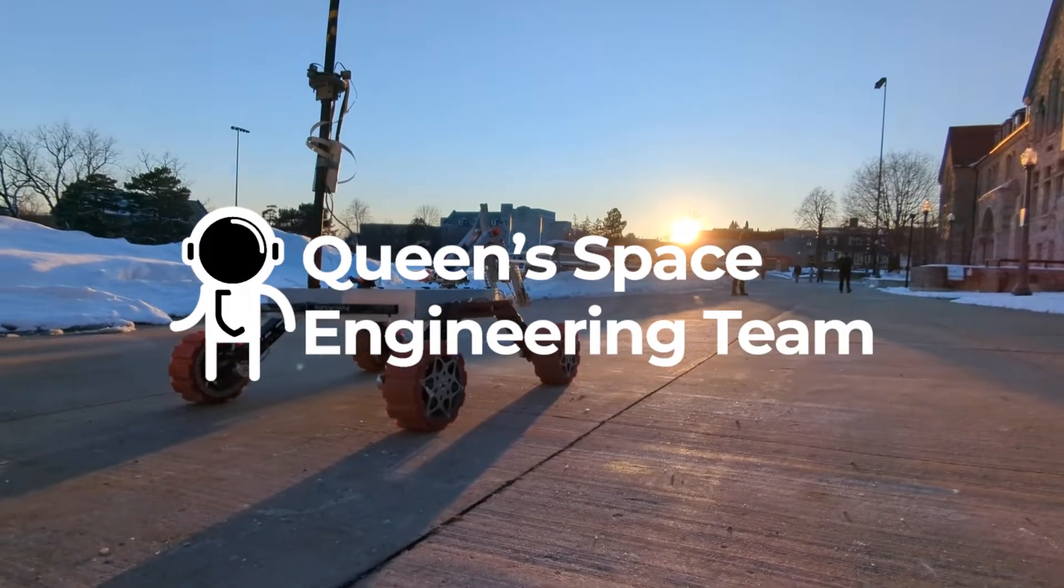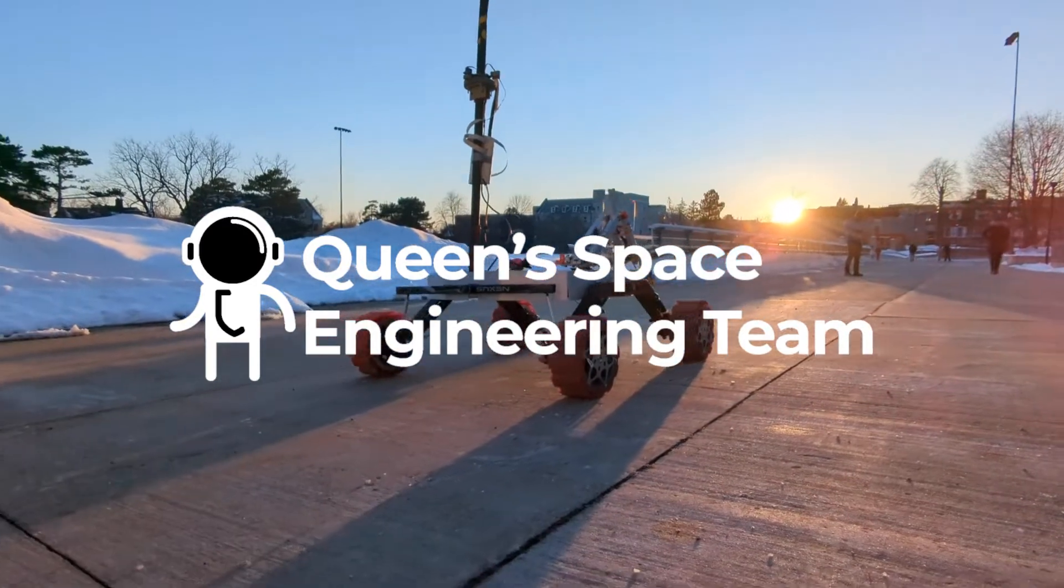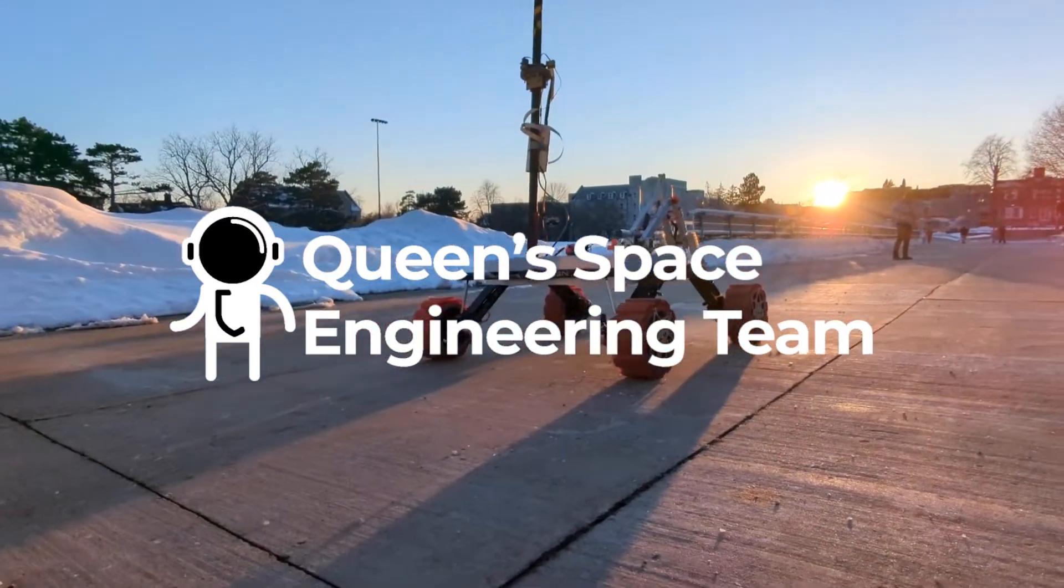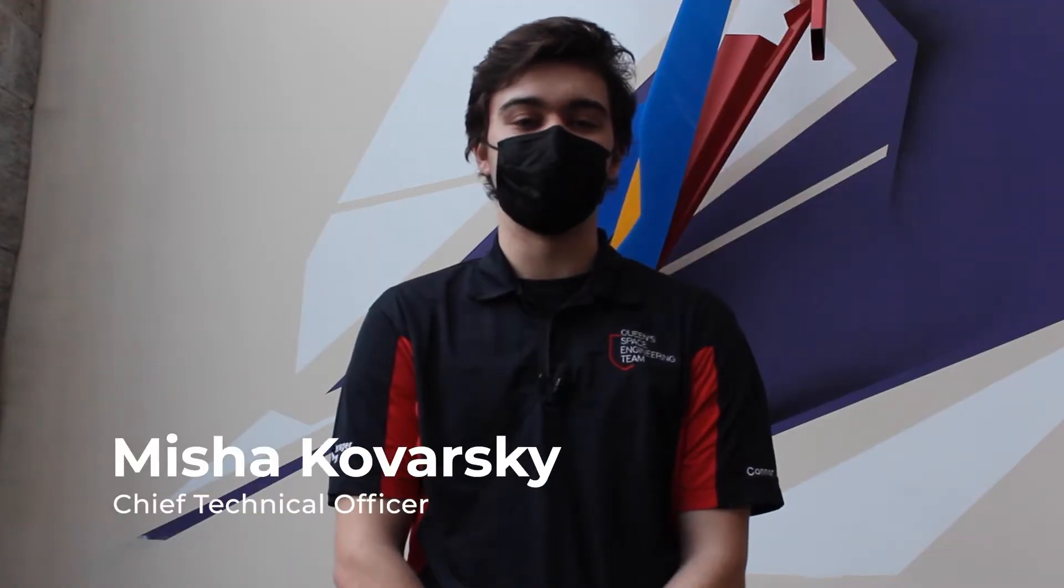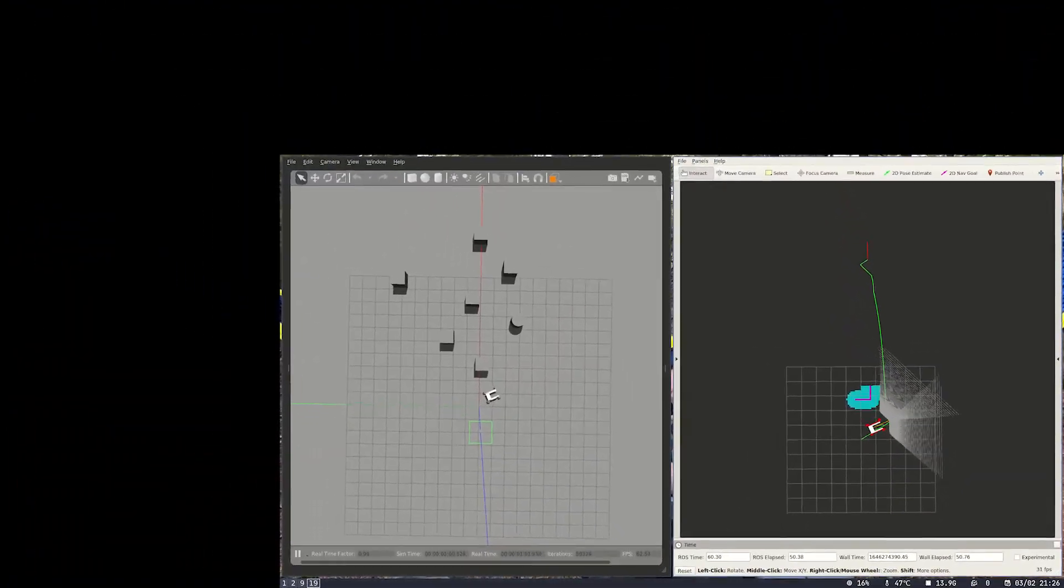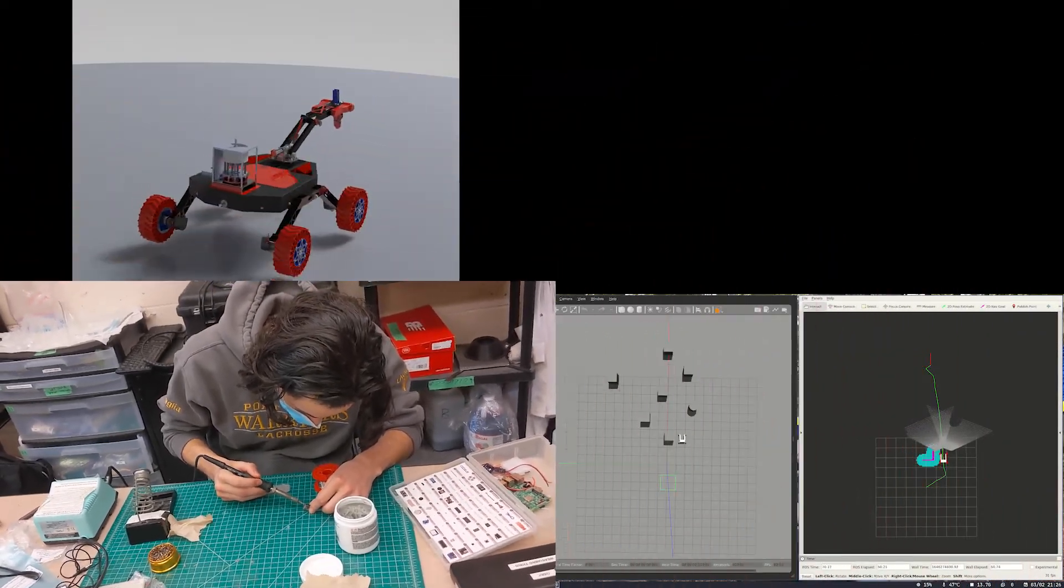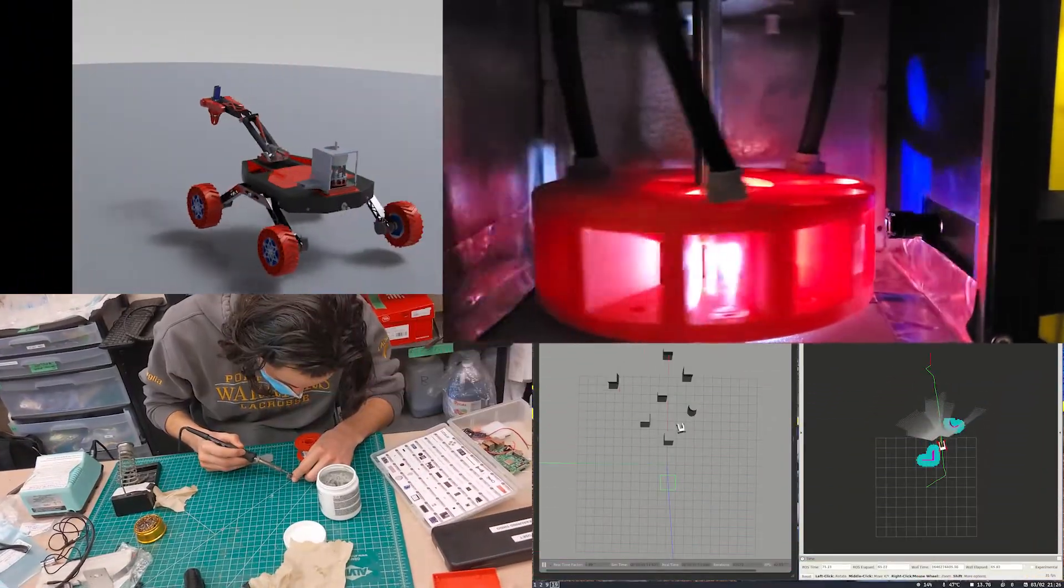Hi there. We're the Queen's Space Engineering Team from Queen's University in Kingston, Ontario. Welcome to our Systems Acceptance Review video for URC 2022. During this year's design cycle, our team has done some incredible work in increasing the reliability and functionality of all of our rover subsystems. During this video, we will show the amazing work that the team has accomplished over the past year and demonstrate our readiness for the missions at URC 2022.